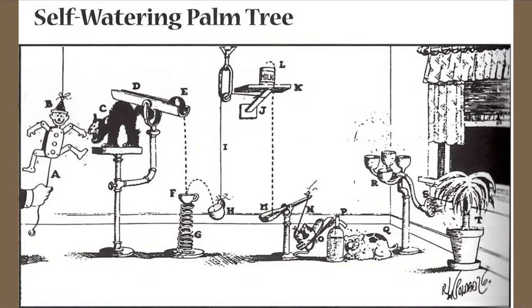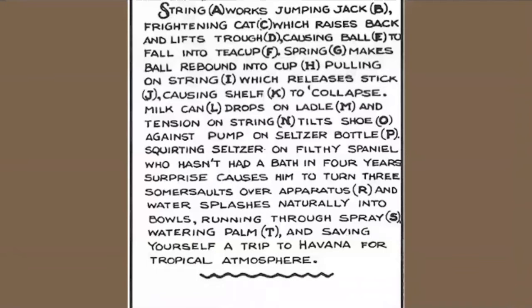You can follow along with the handout and look at the image as I read off the description. String works jumping jack, frightening cat, which raises back and lifts trough, causing ball to fall into teacup. Spring makes ball rebound into cup, pulling on string, which releases stick, causing shelf to collapse. Milk can drops on ladle, and tension of string tilts shoe against pump on seltzer bottle, squirting seltzer on filthy spaniel, who hasn't had a bath in four years. Surprise causes him to turn three somersaults over the apparatus, and water splashes naturally into bowls, running through the sprayer, watering the palm, and saving yourself a trip to Havana for the tropical atmosphere.